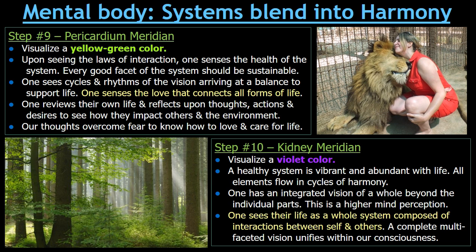Moving on to Step 10, the Kidney Meridian — visualize a violet color. A healthy system is vibrant and abundant with life. All elements flow in cycles of harmony. One has an integrated vision of a whole beyond the individual parts. This is a higher mind perception. One is seeing the whole system — one sees their life as a whole system composed of interactions between self and others and within the environment. A complete, multi-faceted vision unifies within our subconscious.